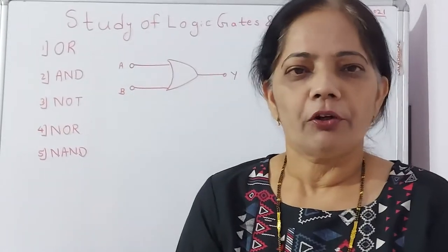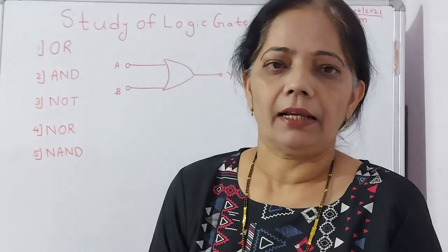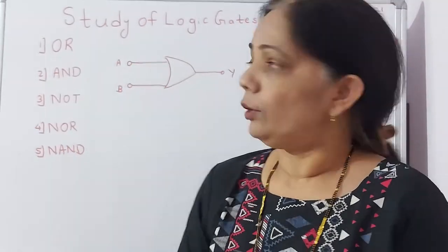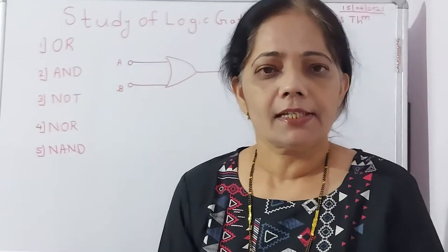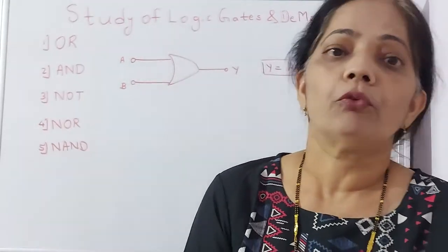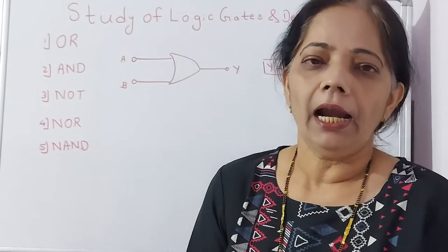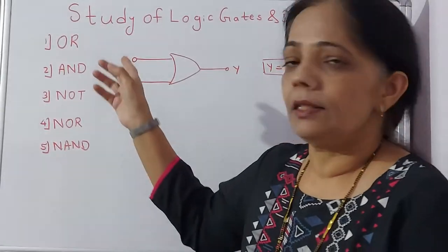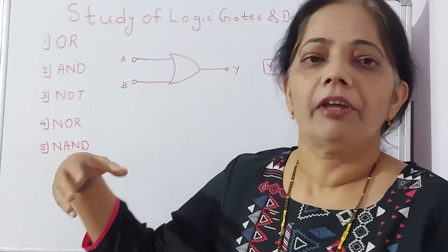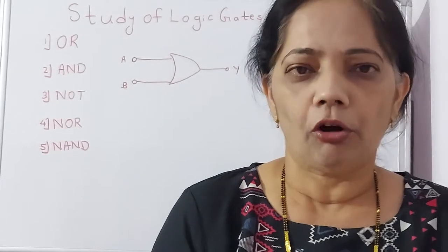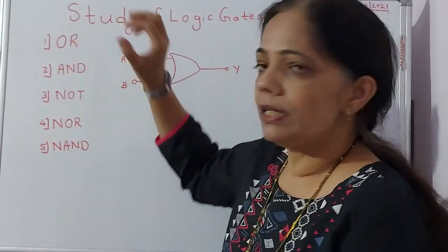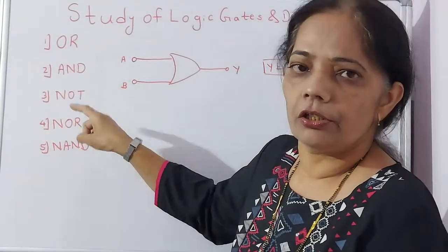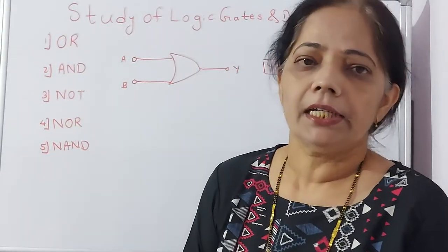Hello students, today I am in front of you with your second practical which is the study of logic gates and De Morgan's theorem. These gates you are already studying in your electronics paper in chapter 4. I just want to revise them and inform you what we do in the lab to check and verify the OR, AND, and NOT gates which are the three universal gates, and the derived gates from them.